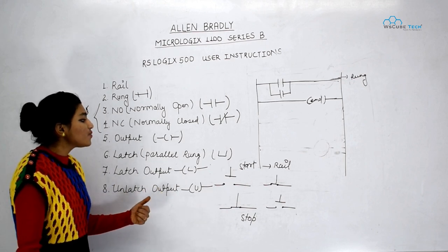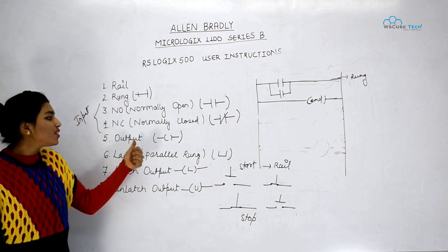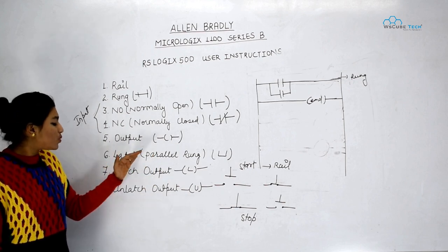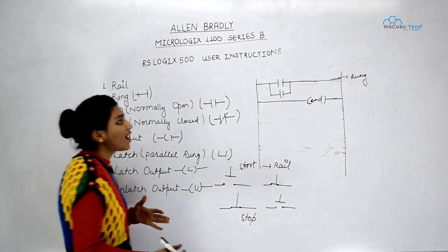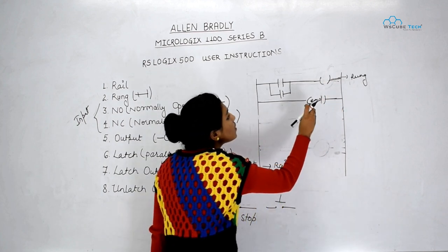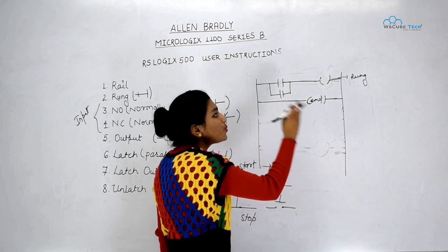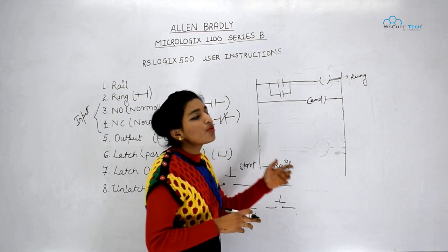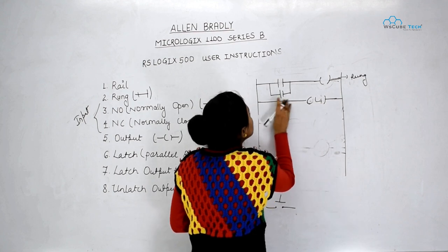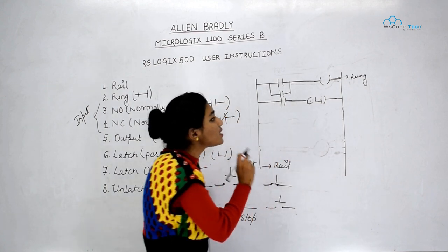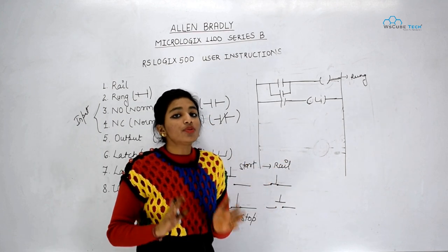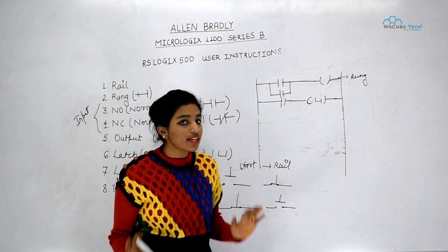Next we have latch output. We already have one output instruction, so why do we have latch output? The difference between simple output and latch output is: with a simple output, when I press the push button the output is on, and when I release it the output turns off. But with latch, when I press the input the output turns on and even when I release it, the output stays on.